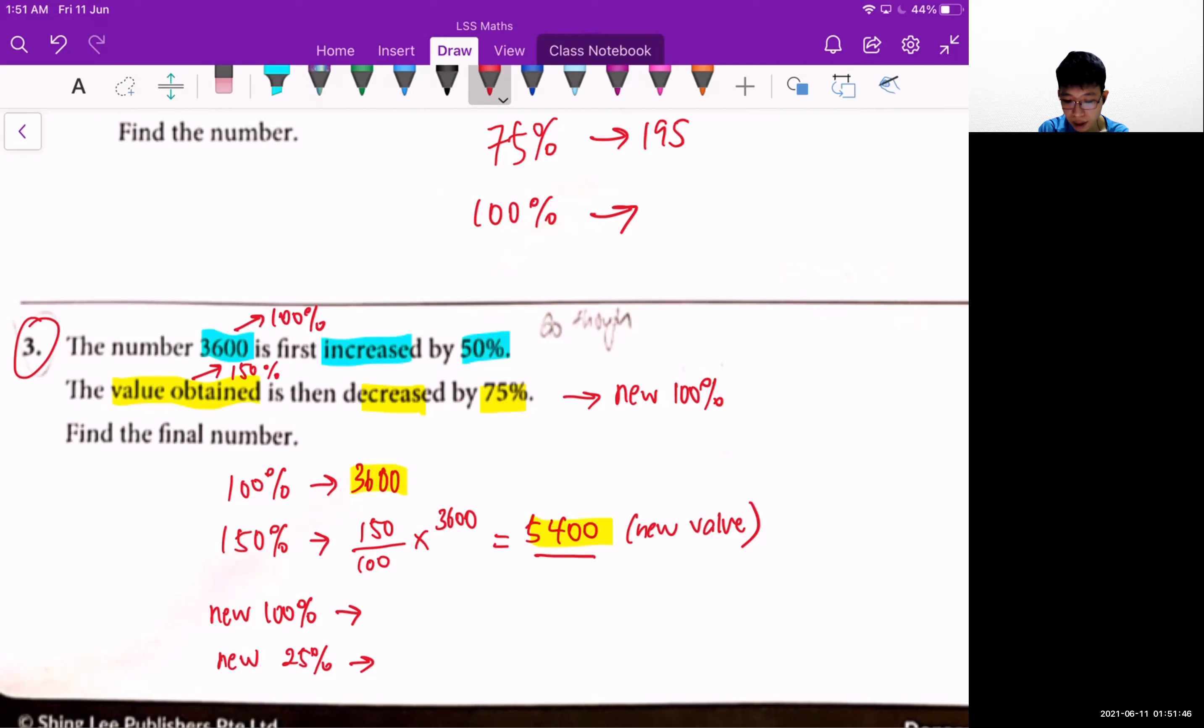But take note that now we're looking at the next statement. This now becomes a new 100%. So whenever there's a new percentage change to a certain value, we must always base it on the new value obtained and this will be the new 100%.